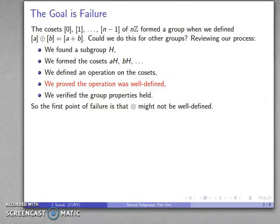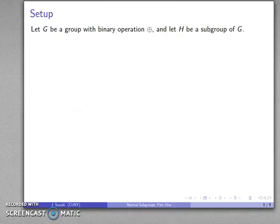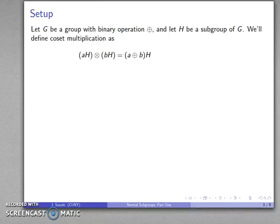So the first point of failure might be that our coset multiplication is not well-defined. So let's see if we can investigate and see when this might happen. So let G be a group with binary operation plus and let H be a subgroup.